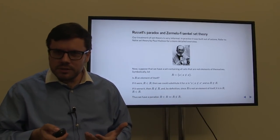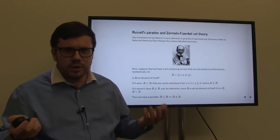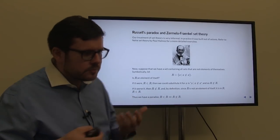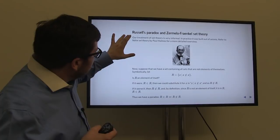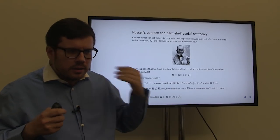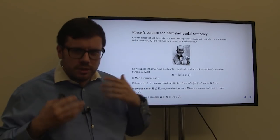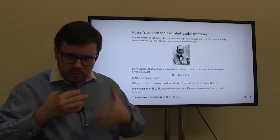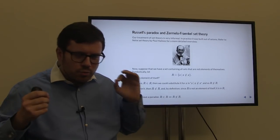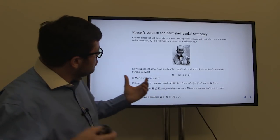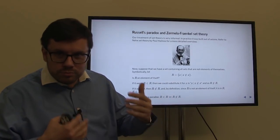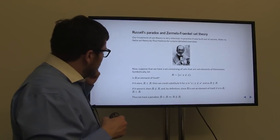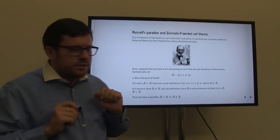So far so good. We said that set theory is the foundation of all modern mathematics. But let us consider some problems. The set theory we are looking at right now is called Naive Set Theory — we are talking about it very informally. The formal way to talk about it is through axioms and a much more rigorous philosophical argument. A good introduction is Paul Halmos's book called Naive Set Theory.